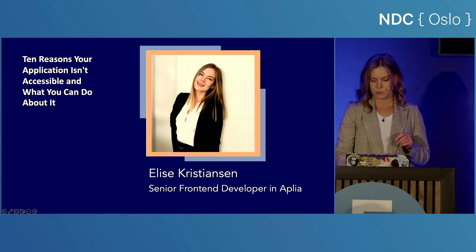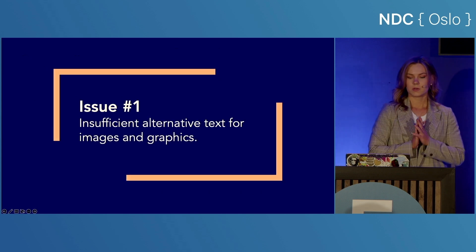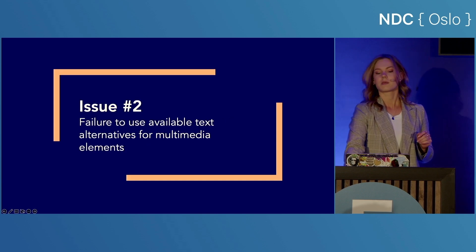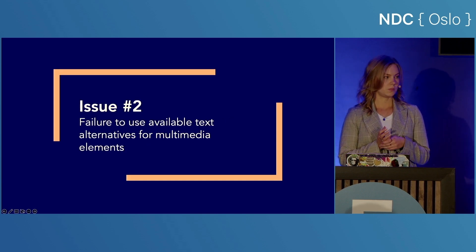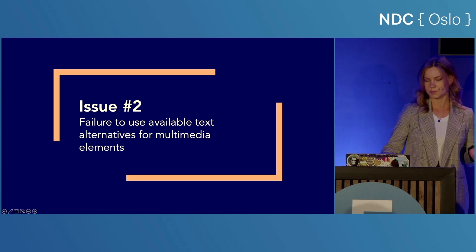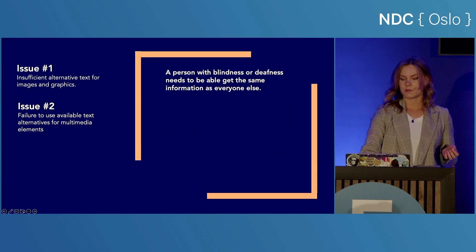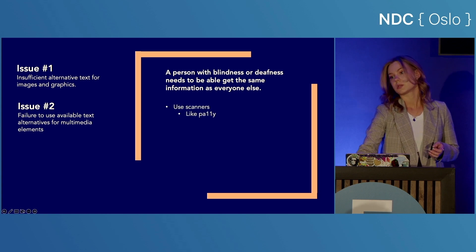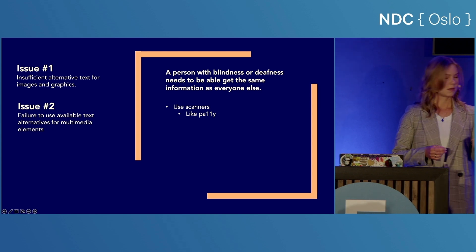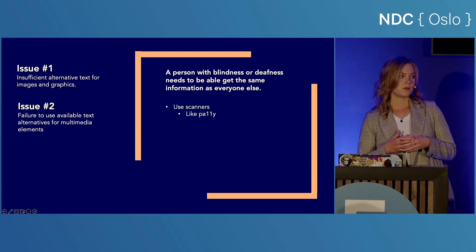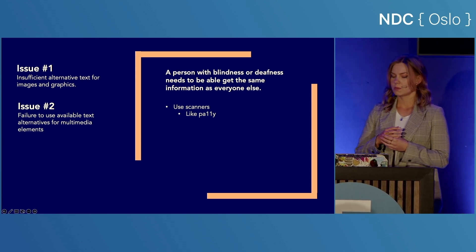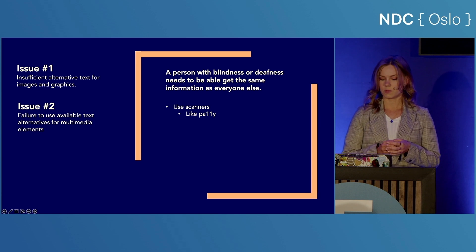I'll begin with some of the more technical issues. Issue number one: insufficient alternative text for images and graphics. And issue number two: failure to use available text alternatives for multimedia elements such as videos and audio files. A person with blindness or deafness needs to be able to get the same information as everyone else. To detect some of these problems, you can use a scanner like Pali. A scanner will be able to tell you if an image or video lacks any text alternative at all, but it might not recognize if the alternative text provides enough context.